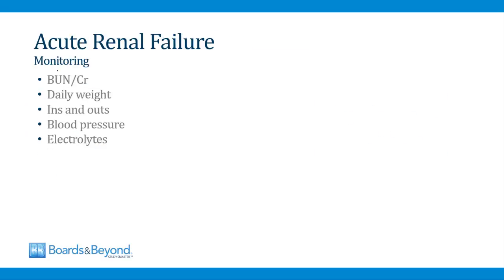Standard monitoring in the hospital for patients with acute renal failure includes: monitoring BUN and creatinine every day; weighing patients every day, since rising weight suggests fluid retention and declining weight suggests increased urine output; recording the ins and outs — total fluid given orally or intravenously versus total fluid going out in the urine; monitoring blood pressure throughout the day; and monitoring electrolytes, because hyperkalemia is an indication for dialysis. That concludes our module on acute renal failure.